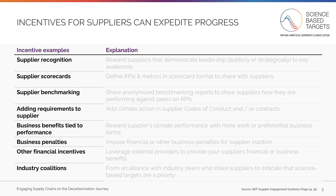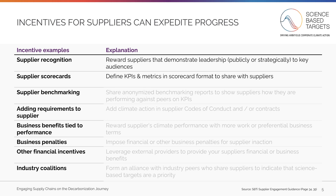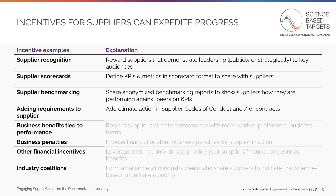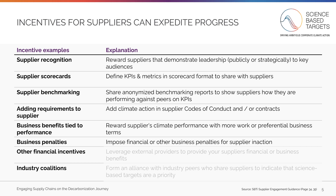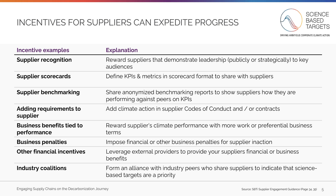Implementing supplier incentives can expedite progress against your supplier engagement target. Some examples of incentives you might consider include: recognizing your suppliers publicly for their climate leadership; using supplier scorecards to define key performance indicators and sharing those with your suppliers; benchmarking your suppliers so they can see how they perform against their peers; making climate action a formal requirement in your codes of conduct or contracts; rewarding climate action with better business terms; financially penalizing suppliers for inaction; utilizing external partners to provide benefits for supplier action; and motivating suppliers via an industry coalition.